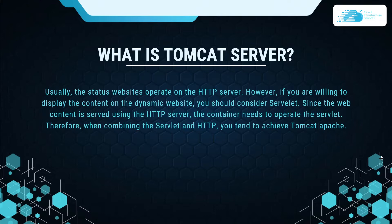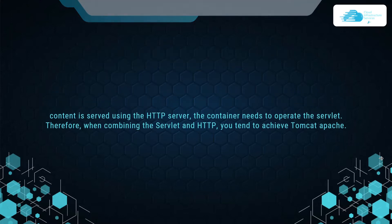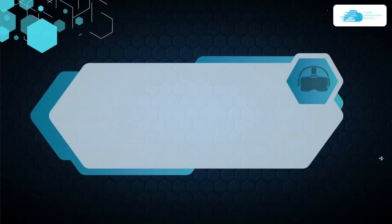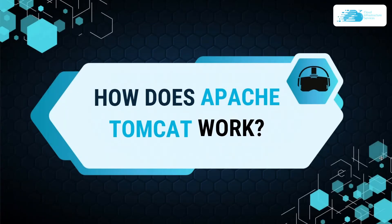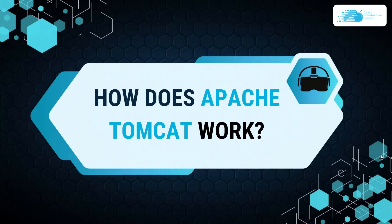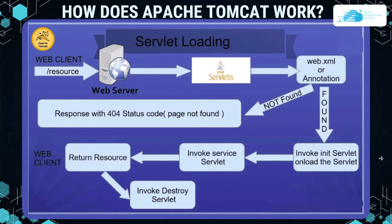When combining the servlet and HTTP, you achieve Apache Tomcat. Now let's talk about how Apache Tomcat works. To better understand the flow of information, let's take a look at this diagram. You can see that the web client accesses the web server and makes a request, then the web server goes to the Java servlets.